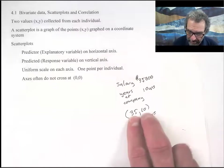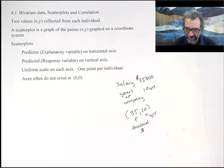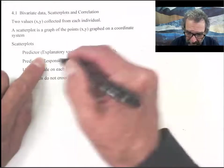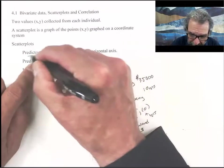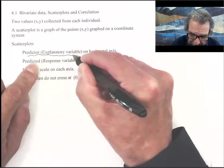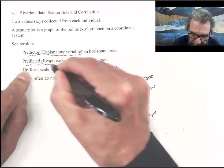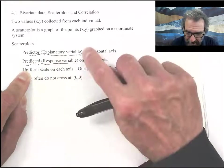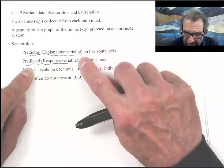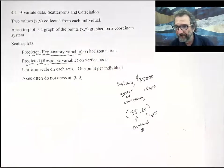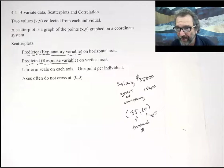Before we graph them we have to decide the predicting value. The predictor value is called the explanatory variable. The predicted value is called the response variable. We put the explanatory variable on the horizontal axis.